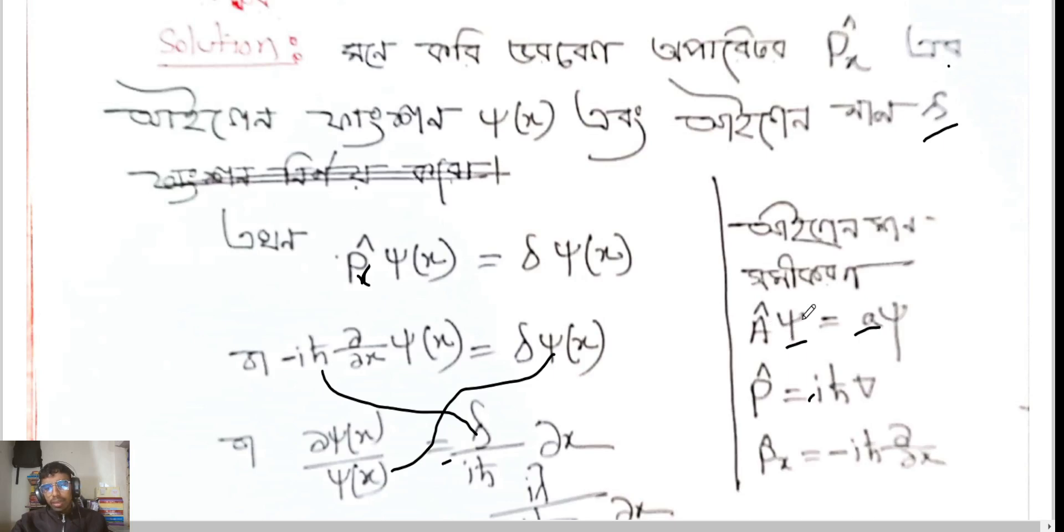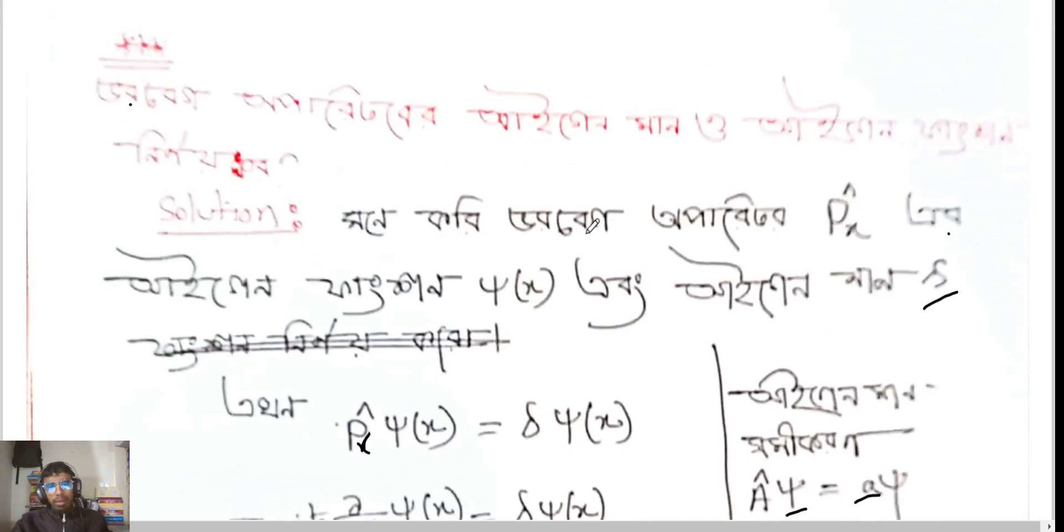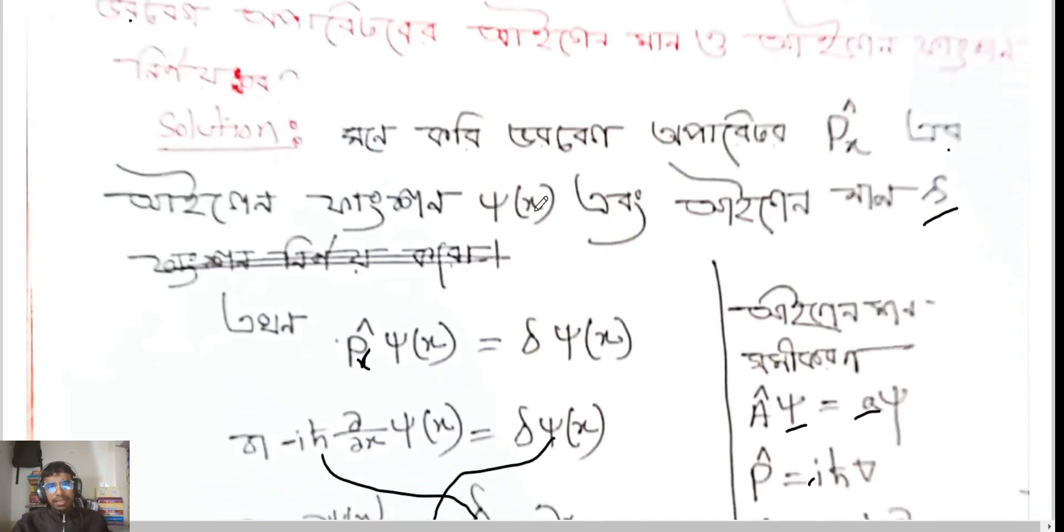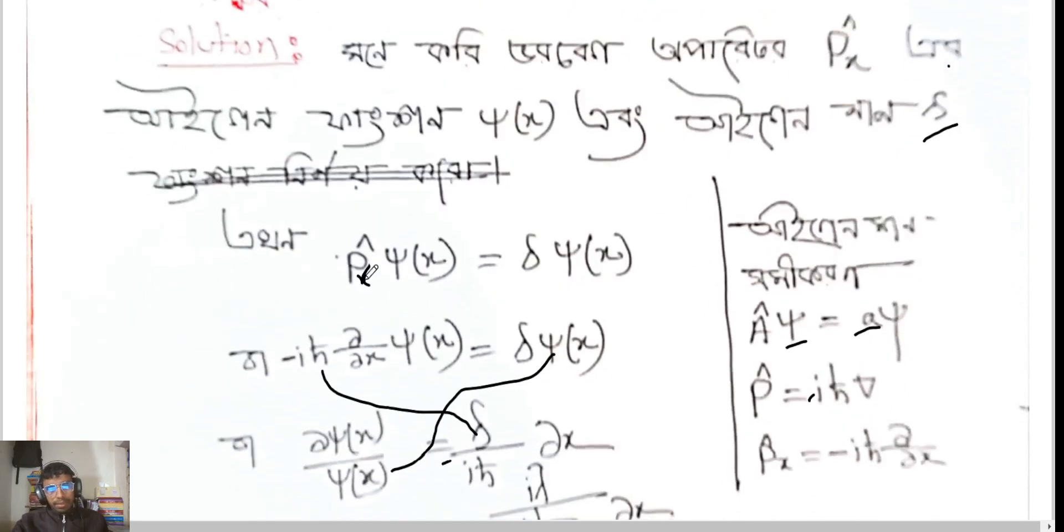Then the other function is equal to del x. Then the operator is equal to del x. The operator is equal to del x, so the operator is equal to dx. Then the operator is equal to the other function is equal to del x. Again, the operator is equal to delta x.